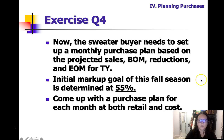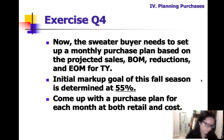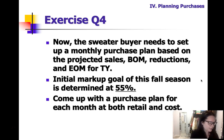Now we're going to add on to our Excel spreadsheet from the other day. The sweater buyer needs to set up a monthly purchase plan based on the projected sales, BOM, reductions, and EOM for this year. The initial markup goal for the fall season is 55%, so we need to come up with a purchase plan for each month at both retail and cost.